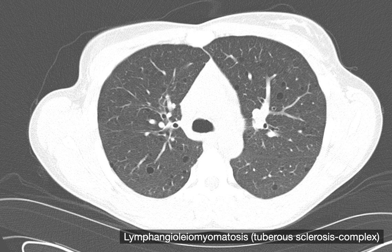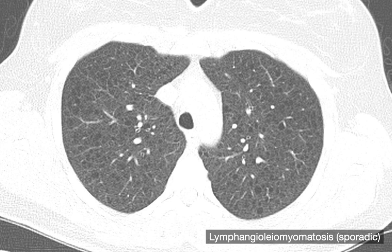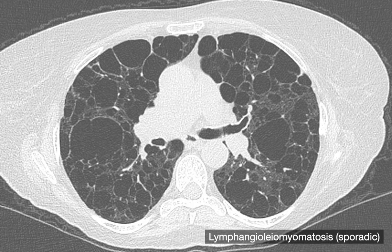Here are examples of cystic lung disease from LAM. One case shows a couple of round, thin-walled cysts in the lung that are pretty small. Another case has small, thin-walled cysts but much more numerous. Cysts can also be medium-sized or quite large at times. The number and size vary from patient to patient, but in general their morphology is similar: round, thin-walled cysts with no substantial upper or lower lung predominance.